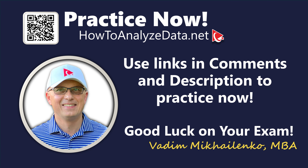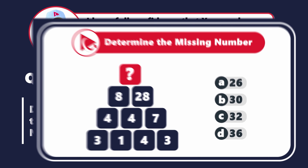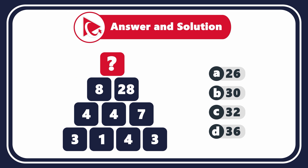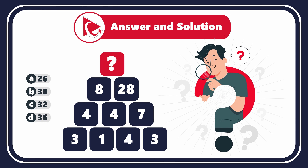Prepare to tackle this intriguing assessment test question, designed not just to test your mental math abilities but also to foster your analytical skills which you can use in day-to-day life. You need to determine the missing number located on the top of the pyramid. The other numbers in the pyramid are 8 and 28 in the second row; 4, 4, and 7 in the third row; and 3, 1, 4, and 3 in the fourth row. Select the missing number out of four choices: A (26), B (30), C (32), or D (36). Here's a hint: consider that I might be trying to mislead you by the way I present the information — maybe there is another way to look at this data.